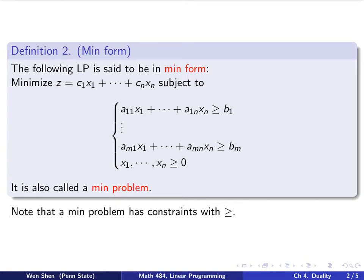One thing we need to pay attention or be careful is for the minimization problem, the constraints are with the bigger than equal sign. On the surface, it looks very similar. You change max into min, and you change the sign of the inequality to bigger than equal to. And this becomes a min problem.